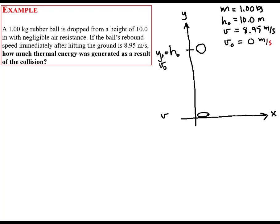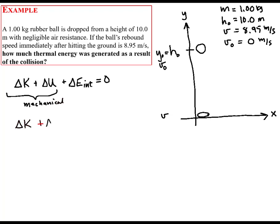Since we're dealing with energy, I'll express conservation of energy, which states that the change of macroscopic potential and kinetic energy plus the change of internal energy is equal to zero. The change of kinetic plus the change of potential energy is what we call mechanical energy. Internal energy is comprised of thermal energy plus chemical potential energy plus nuclear potential energy, and that sum equals zero.